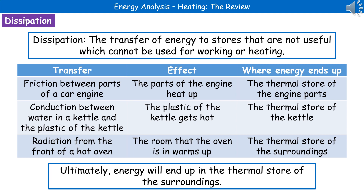The next idea to consider is dissipation. When we refer to dissipation, we're talking about the transfer of energy to stores that are not useful — stores that cannot be used for working or heating. For example: friction between parts of a car engine causes engine parts to heat up, so energy ends up in the thermal store of the engine parts, which is no use for making the vehicle move. Conduction between water in a kettle and the plastic of the kettle heats the plastic — that's energy transferred to the thermal store of the kettle, which won't boil the water. Radiation from the front of a hot oven warms the room, transferring energy to the thermal store of the surroundings, which won't cook food inside the oven. All of these are wasted energy.